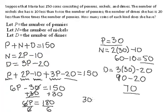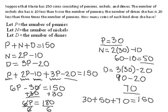Let's verify: 30 plus 50 plus 70 should equal 150. 30 plus 50 is 80, and 80 plus 70 is 150. That checks out.